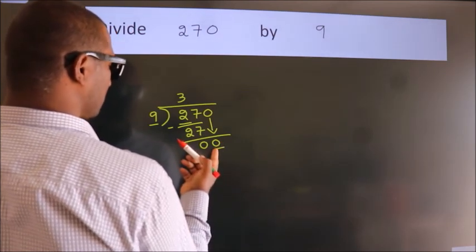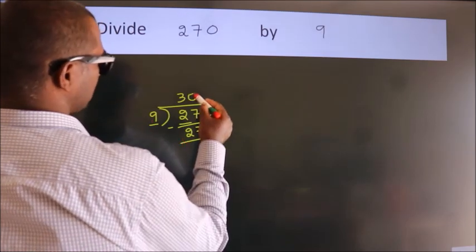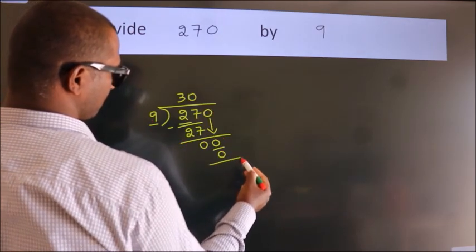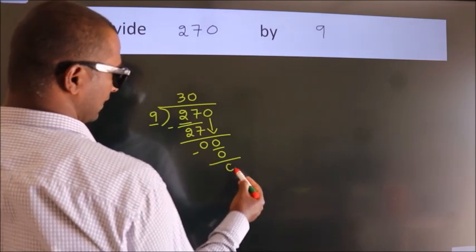When do we get 0? In 9 table. 9 times 0. 0. Now we subtract. We get 0.